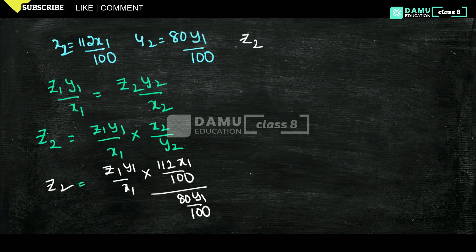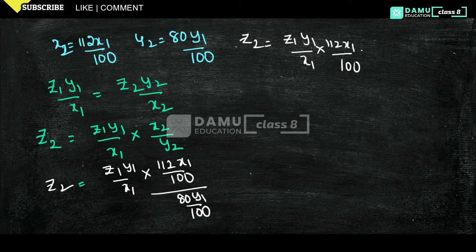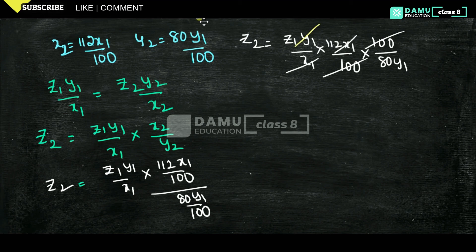So z2 equals z1 times (y1/x1) times (112·x1/100) times (100/80·y1). The 100s cancel, x1 cancels, and y1 cancels, leaving z2 equals (112/80) times z1.